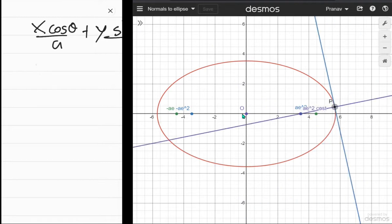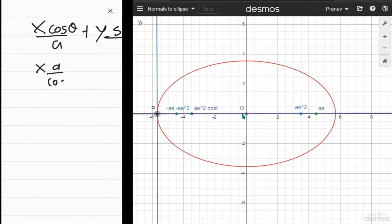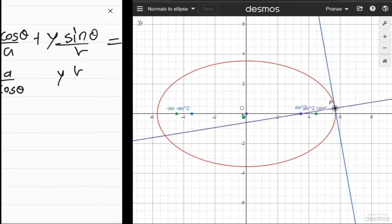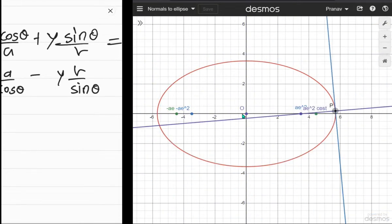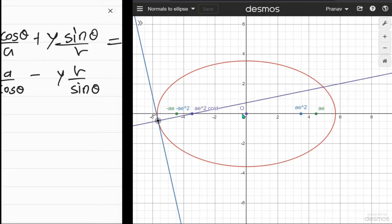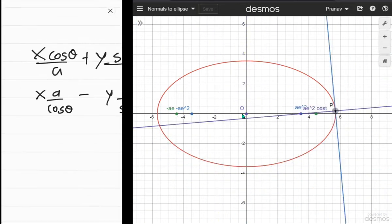reciprocate these coefficients, so (xa)/cos θ and (yb)/sin θ, and we'll add a negative there. Now the slope is negative one over what it would be for the tangent, and that equals some constant.